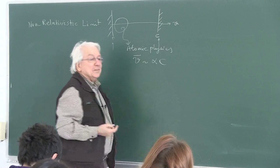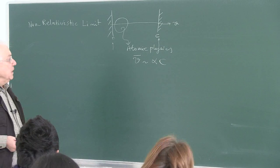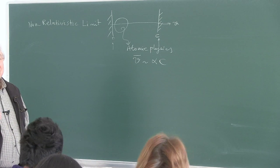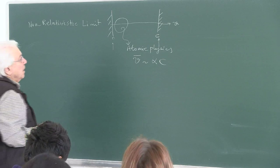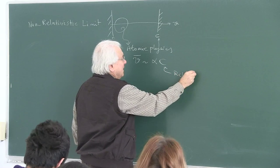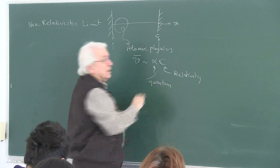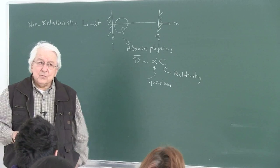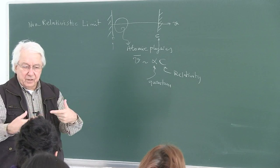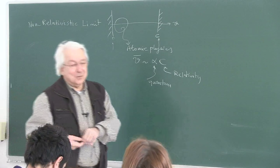There are two fundamental constants entering the game. c is the speed of light, and v/c is a degree of relativity — how much relativity is involved. So c is related to relativity, and at the atomic level two fundamental constants are intermingled: one is a measure of quantumness, the other is a measure of relativistic character.